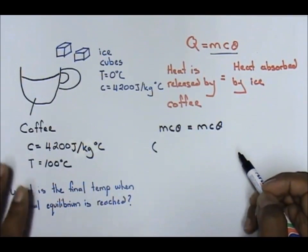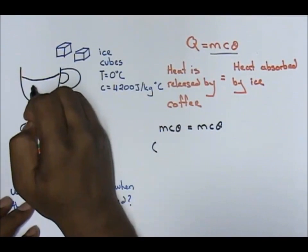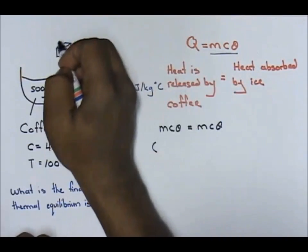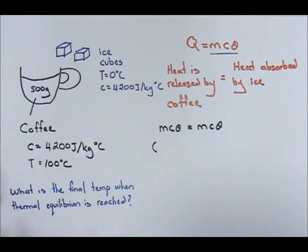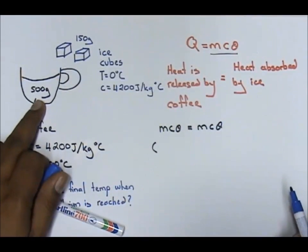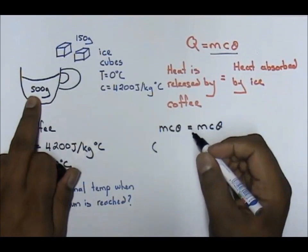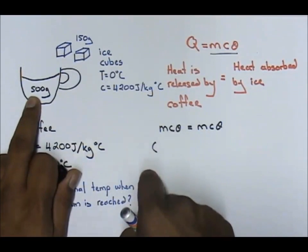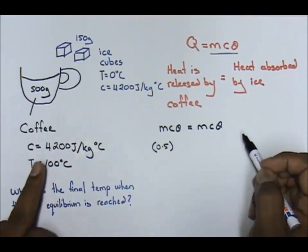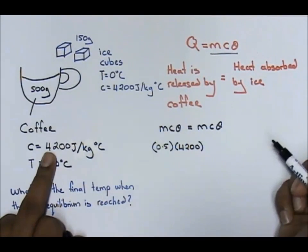Now, the mass of coffee — let's just say I'm going to give you the mass of coffee to be 500 grams, and ice, let's say, 150 grams. So the mass of coffee is 500 grams — remember, you cannot write 500 grams, it must be in kilograms — so 0.5. The specific heat capacity is 4200.